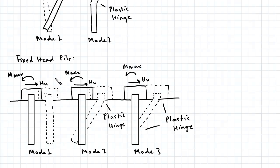In this second diagram you can see the possible failure modes for a fixed head pile. In mode 1, the soil fails first. In mode 2 and mode 3, the pile experiences a structural failure and forms a plastic hinge. In mode 3, there are two plastic hinges. Also note that because rotation is constrained in fixed head piles, we have a reaction moment in the pile cap.